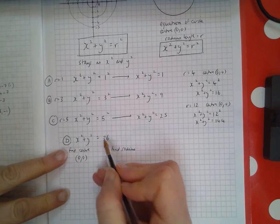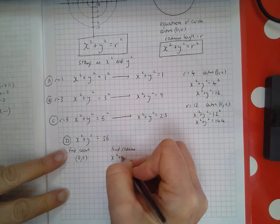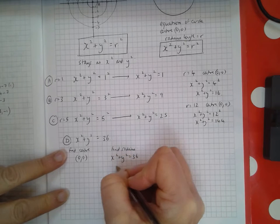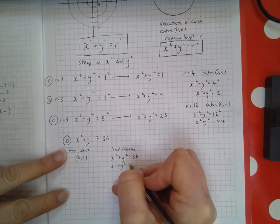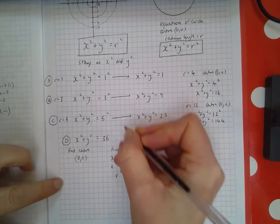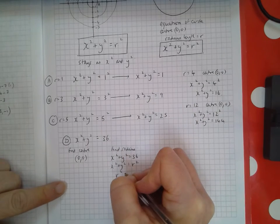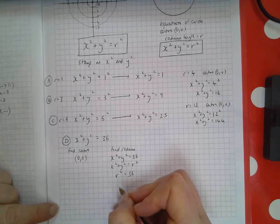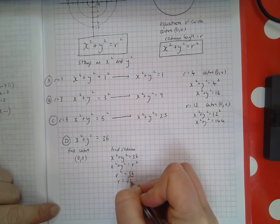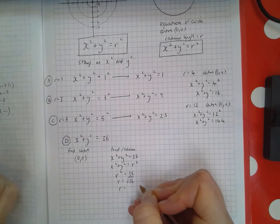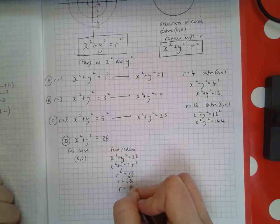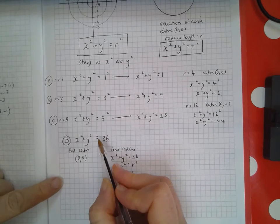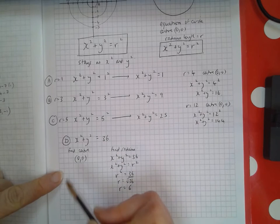For the radius, x² + y² = 36 means x² + y² = r². So r² = 36, which is the number on the right-hand side. Therefore r = √36 = 6. This circle has center (0,0) and radius 6.